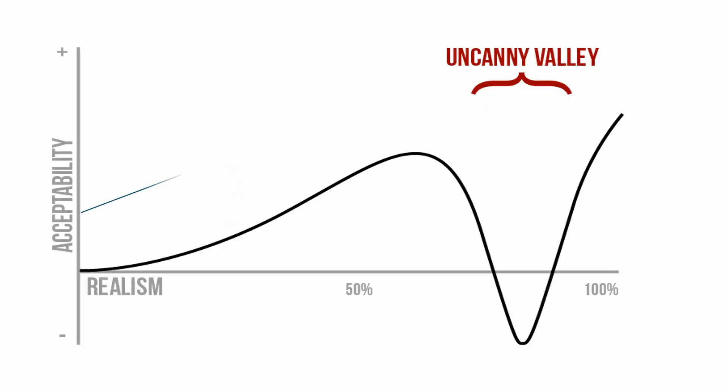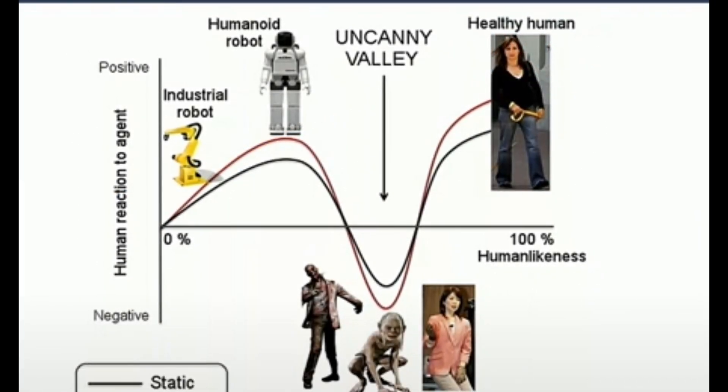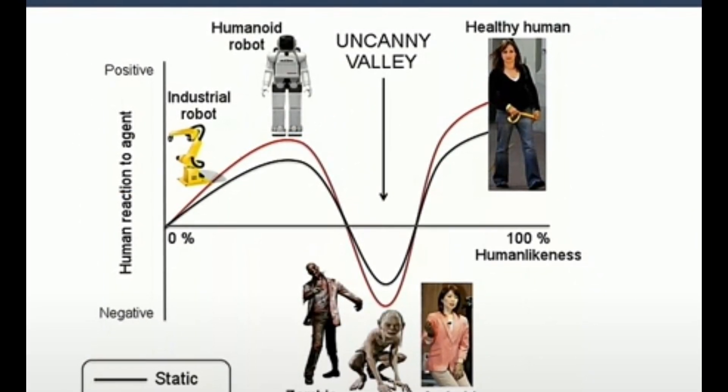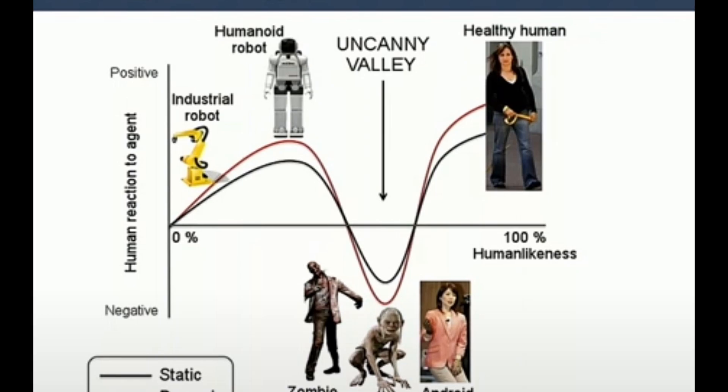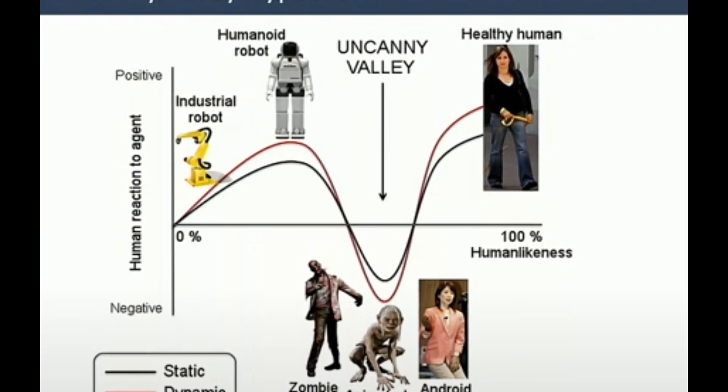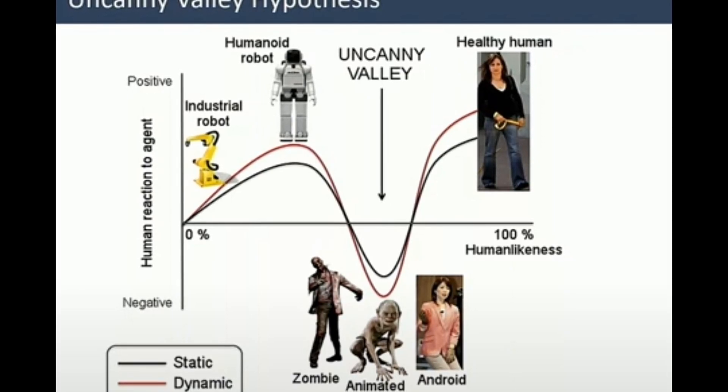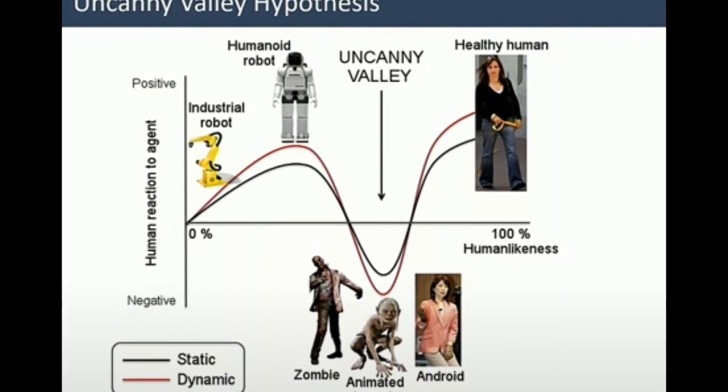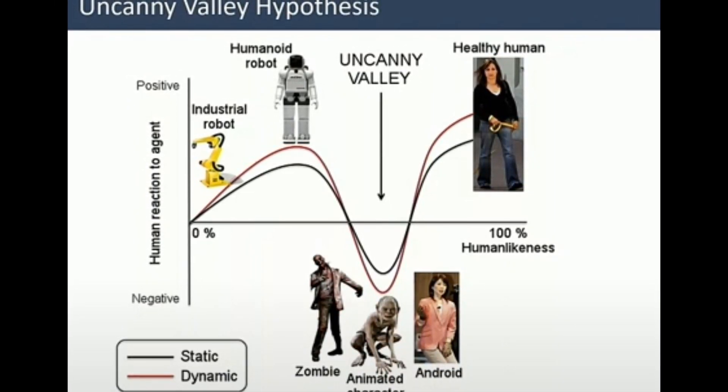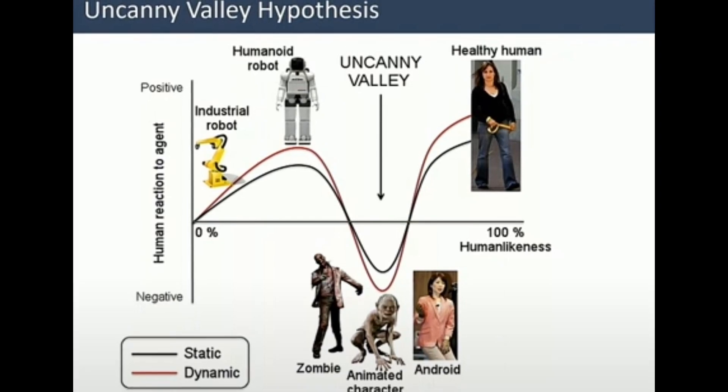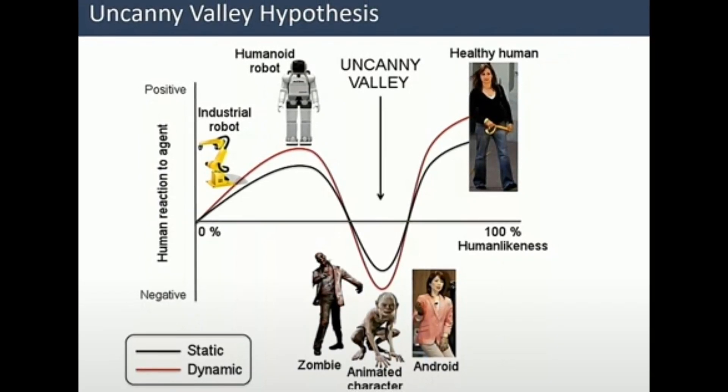As realism in robotic design increases to closely mimic human behavior, we encounter advanced humanoid robots like Tesla's Optimus, which begins to approach the edge of the uncanny valley. The uncanny valley, first introduced by Japanese roboticist Masahiro Mori in 1970, refers to a hypothesis suggesting that humanoid objects, like robots or animated characters, that almost, but not perfectly, mimic human appearance and behavior can evoke feelings of unease or discomfort.